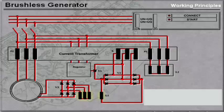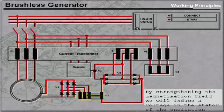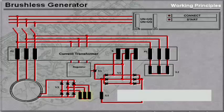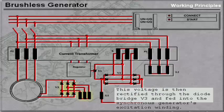A direct excitation current will flow from V2 through the excitation winding L1. By strengthening the magnetization field, we will induce voltage in the stator of the excitation machine. This voltage is then rectified through the diode bridge V3 and fed into the synchronous generator's excitation winding.